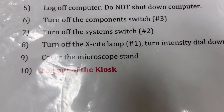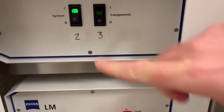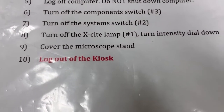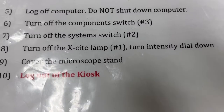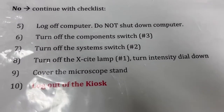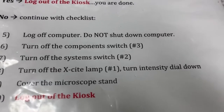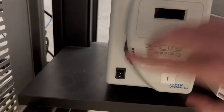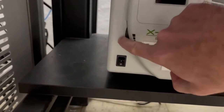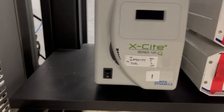The next step is going to be to turn off the system switch — that's number two. After that, we're going to turn off the excite lamp and turn the intensity dial down. I actually already did this because I turned it off in an incorrect way, so I can't demonstrate it because it's already off, but I'll show you where that is. You can see it's off, but if it were on, you would hit this switch. It's on the zero position, and then you lower this intensity dial, which has already been done.